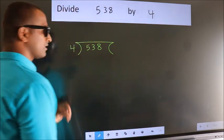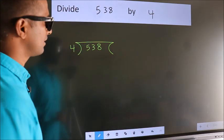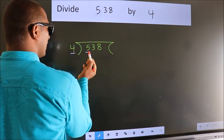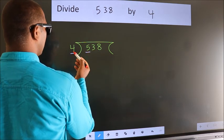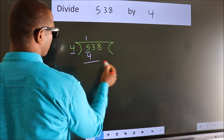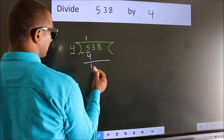This is your step 1. Next, here we have 5, here 4. A number close to 5 in 4 table is 4 once 4. Now we should subtract. We get 1.